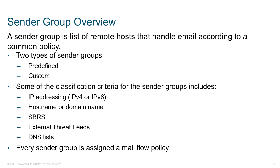A sender group is a list of remote hosts that handle email in a certain way. We can define that when receiving email from certain servers, we want to handle things differently. What do we use to define them? It could be an IPv4 or IPv6 address, a domain name, or we could do it based on reputation — are they somebody that typically sends a lot of spam? We can also leverage external threat feeds. SBRS is basically Cisco telling you the reputation of the sender, and if you want to augment that with additional threat intelligence, we can pull in external feeds.